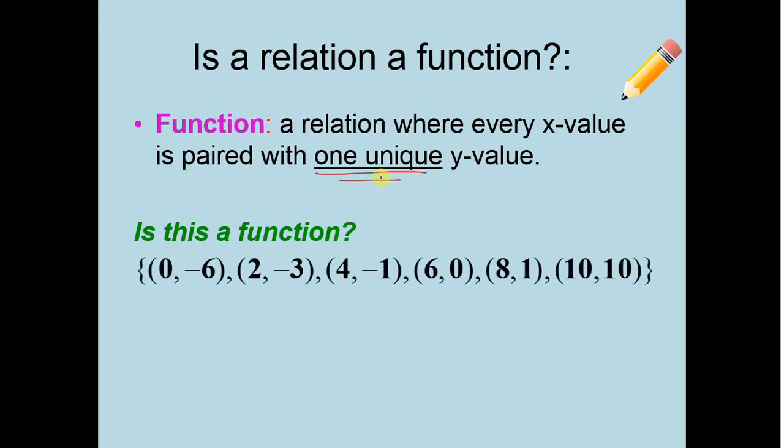So let's look here and let's see if each x has its own y value. So 0 goes to negative 6, 2 goes to negative 3, 4 goes to negative 1, 6 goes to 0, 8 goes to 1, and 10 goes to 10. There are no multiple x's in this problem. Because of that, we know it is in fact a function, because each x value has one y value mapped or related to it.